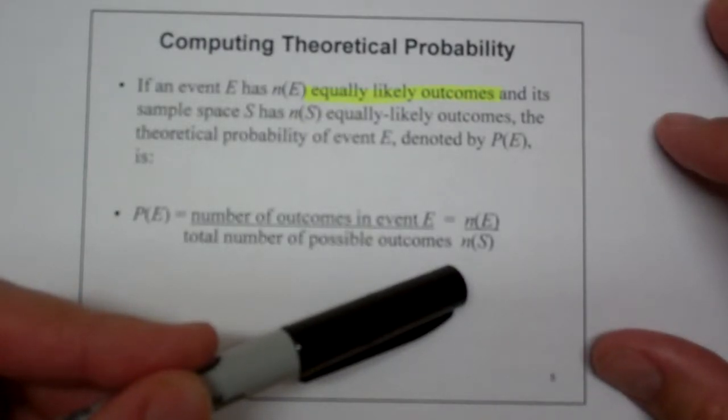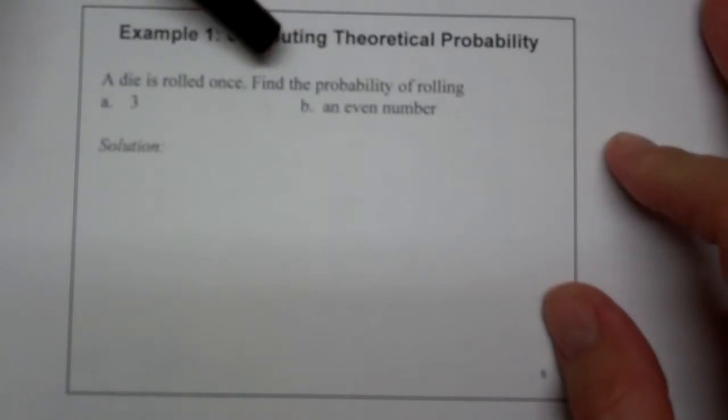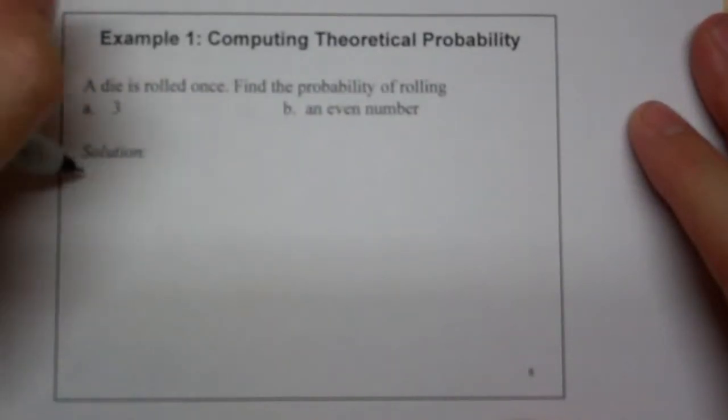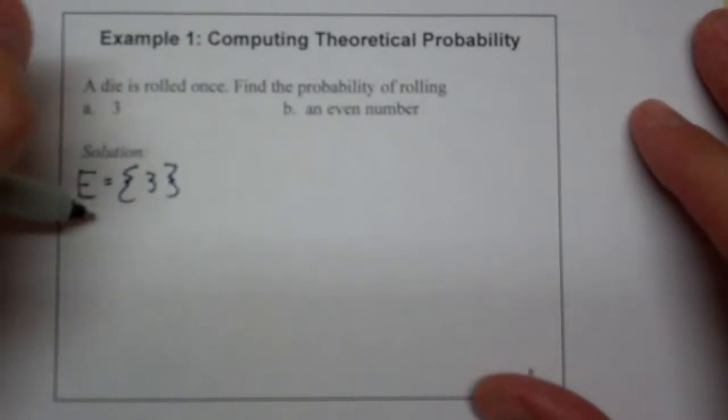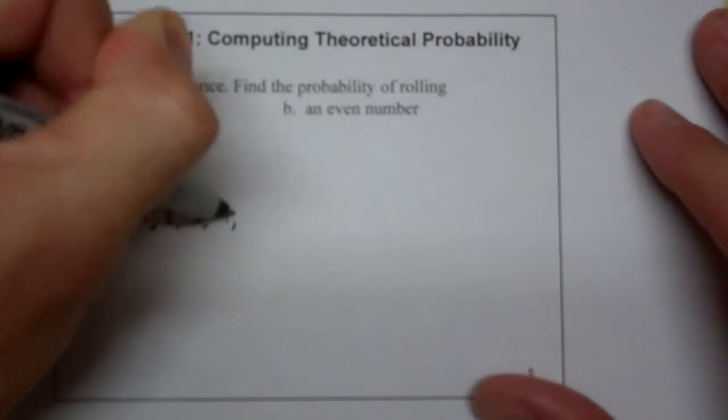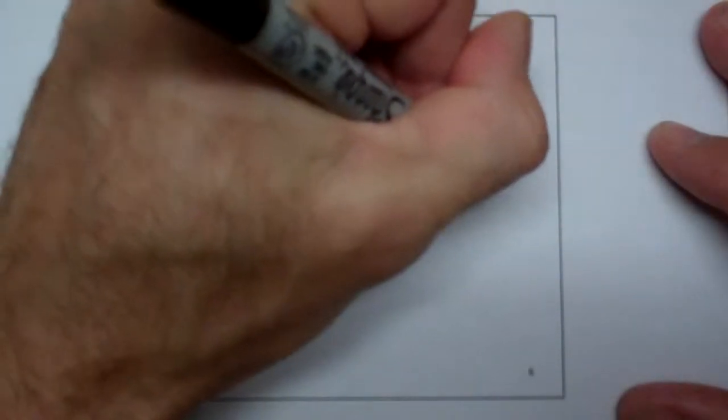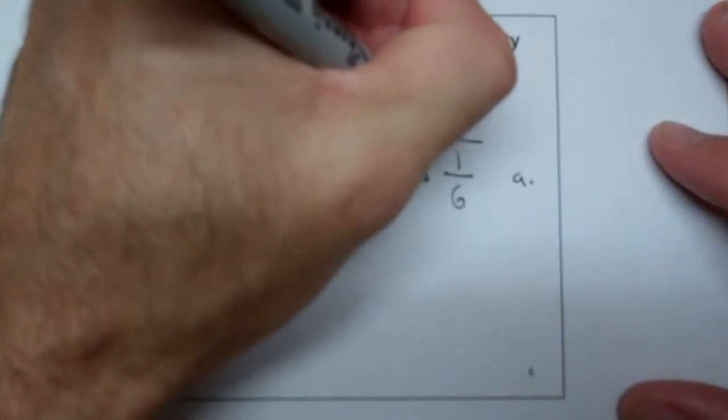So let's actually do a couple of examples instead of talking about these in general. I have mentioned the dice roll a few times. So here we go. A die is rolled. We're going to assume it's a six-sided die. We're going to find the probability of rolling a three. Well, if you think about it, the event space for rolling a three is just three. The sample space for a six-sided dice is going to be one, two, three, four, five, and six. So that means that the probability of a three is going to be equal to one over six. So that's the answer to A, and that makes us happy.